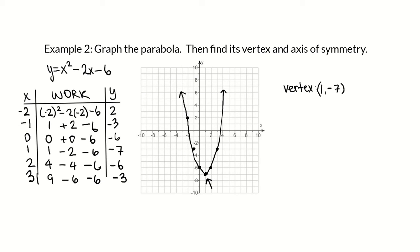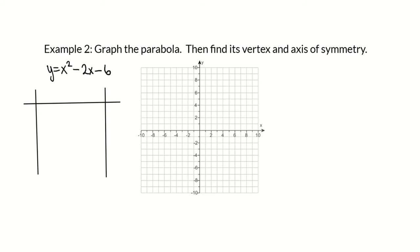The axis of symmetry is the line that divides the parabola in half. It goes through the middle of the parabola and through the vertex. That is the vertical line x equals 1, which is the axis of symmetry for this graph.